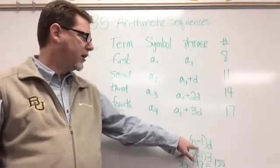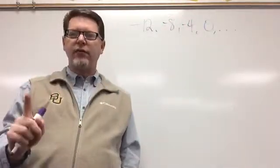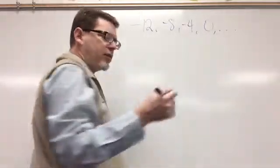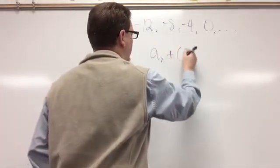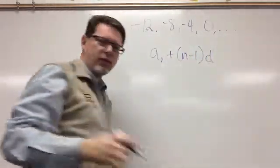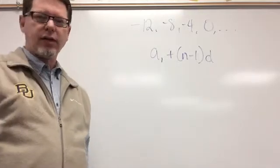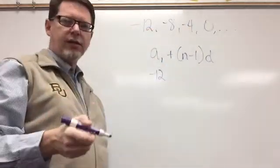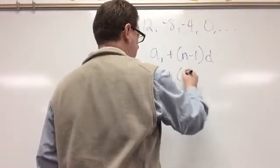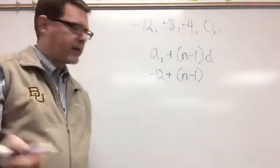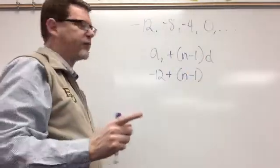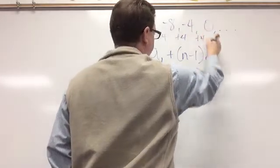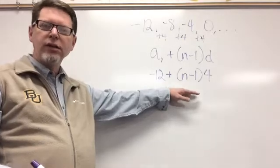Let's take this sequence: negative 12, negative 8, negative 4, zero, dot dot dot. Let's figure out the equation for the nth term. The equation is a sub one plus the quantity of n minus one times d. a sub one is negative 12. The common difference: from negative 12 to negative 8 is plus four, negative 8 to negative 4 is plus four, negative 4 to zero is plus four. So the phrase is: negative 12 plus the quantity of n minus one times four.